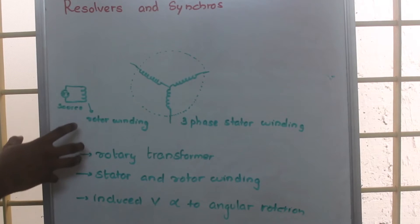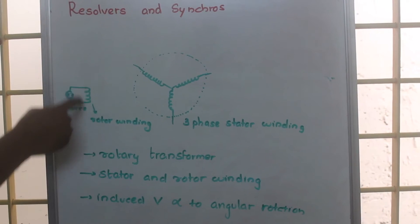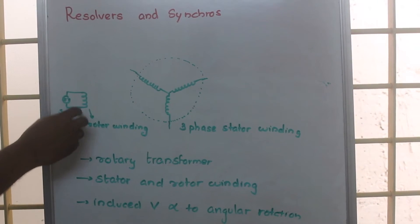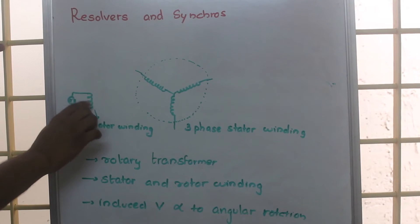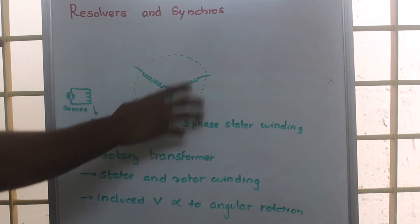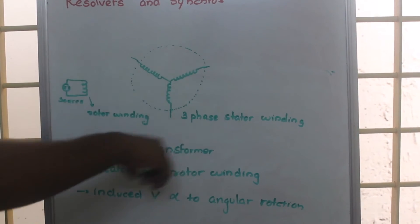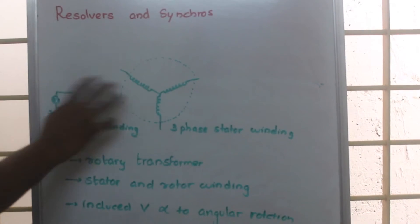We provide an AC source such that an EMF is induced in this. Because of that, this becomes the primary winding and this is the secondary winding. As it rotates, transformer action occurs.